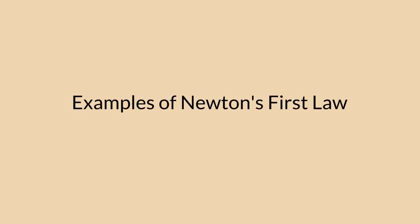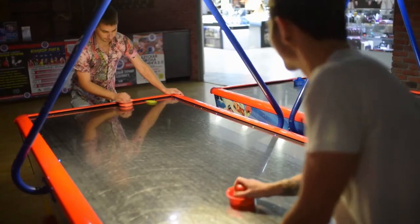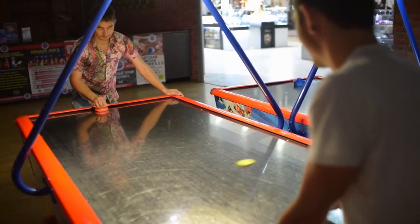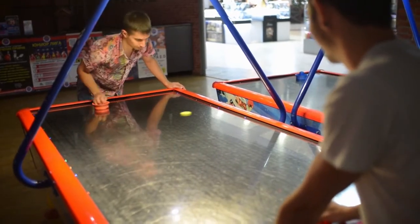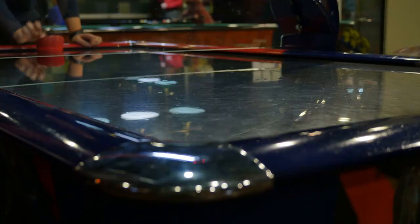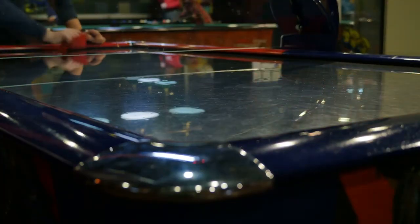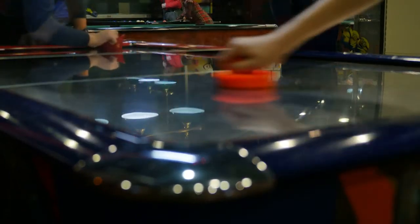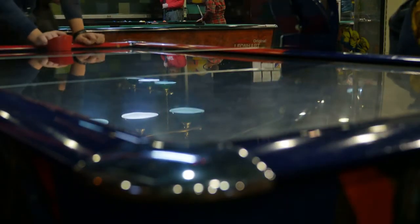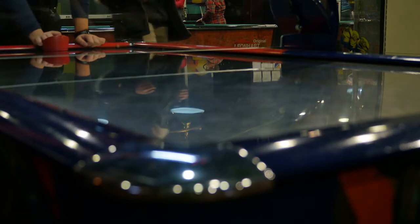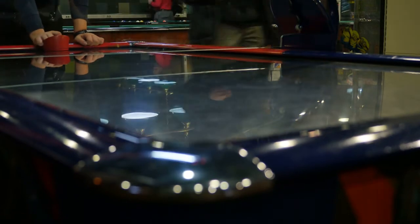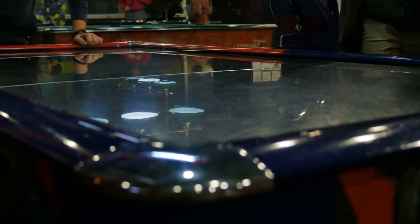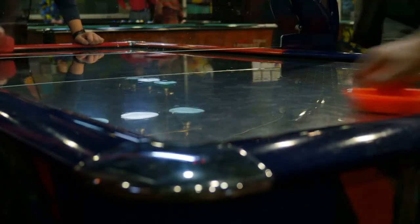Now, time for some examples of Newton's first law. For example, an air hockey table. When the air is on, the friction on the table is significantly reduced. But when you turn off the air on the hockey table, the friction increases.